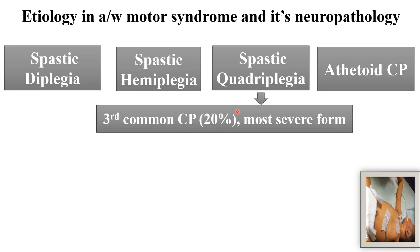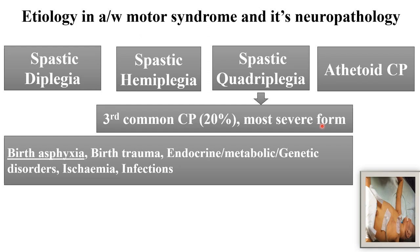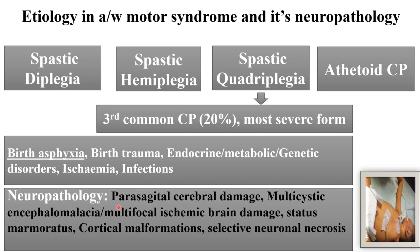Spastic quadriplegia is the third most common type of CP, present in around 20% of cases, and is the most severe form. Birth asphyxia is the main etiology. With a history of severe birth asphyxia and HIE grade 3, there are more chances of developing spastic quadriplegia. Other causes include birth trauma, endocrine, metabolic and genetic disorders, ischemia, and infection. In neuropathology: parasagittal cerebral damage, multicystic encephalomalacia, multifocal ischemic brain damage, status marmoratus, cortical malformation, and selective neuronal necrosis.